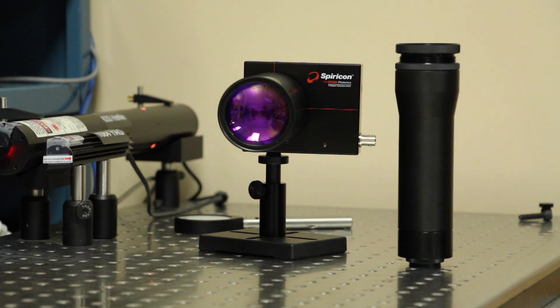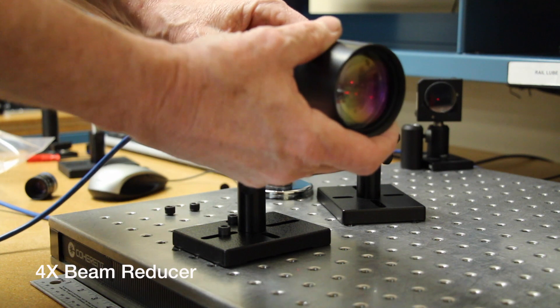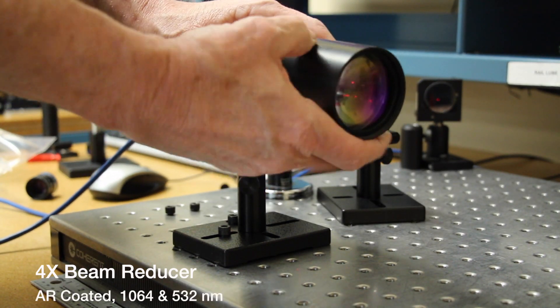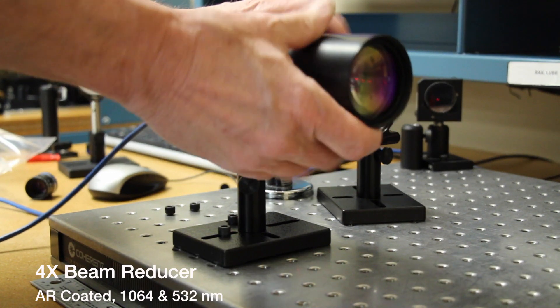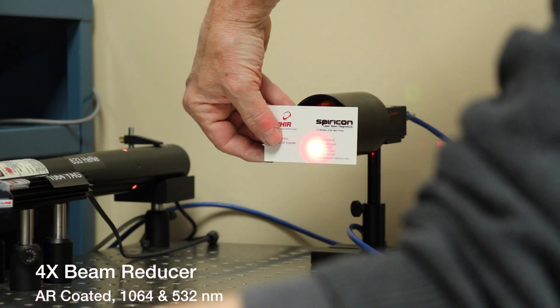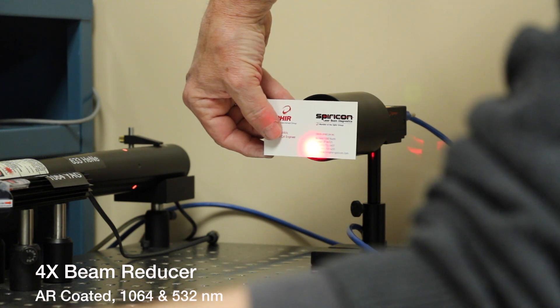Ophir Spiricon also offers two optical 4x beam reducer options. The 4x imaging beam reducer is AR-coded for use at 1064 nanometers and 532 nanometers. The maximum spot size is approximately four times the active area of the camera that is used.